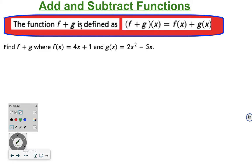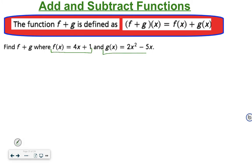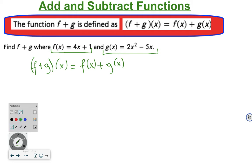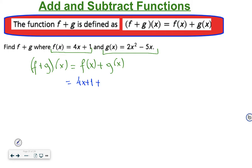Find f plus g, where f(x) is defined as 4x plus 1 and g(x) is defined as 2x squared minus 5x. We need to add those two functions. So (f + g)(x) can be written as f(x) plus g(x). We know f(x) is 4x plus 1, and g(x) is 2x squared minus 5x.